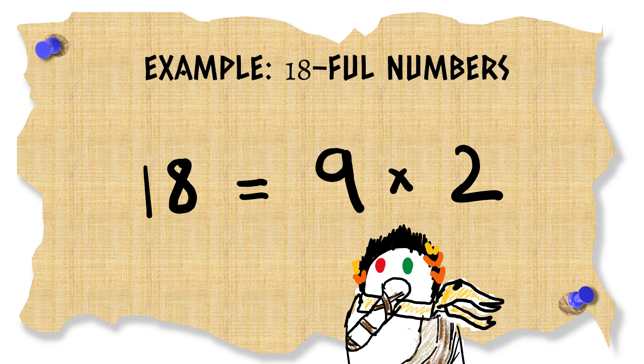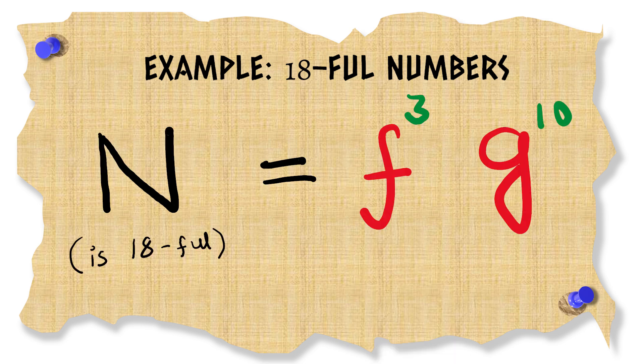And if you had picked another factorization, say 9 times 2, then we could write them as f to the 3 times g to the 10.